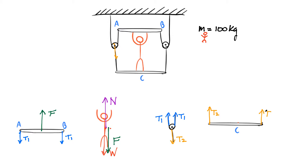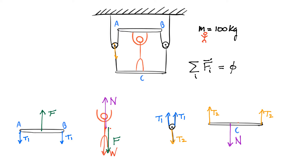Last but not least, we have platform C, which has a lot of forces acting on it. Since we drew T2 acting on the pulley, by Newton's third law there has to be an action-reaction pair: T2 acts on platform C, and since there are actually two strings, we have to put both of them. There's also the normal force — since the platform exerts a normal force on the guy, Newton's third law requires an equal and opposite force acting back on platform C. Now let's go solve Newton's first law to find N and F.